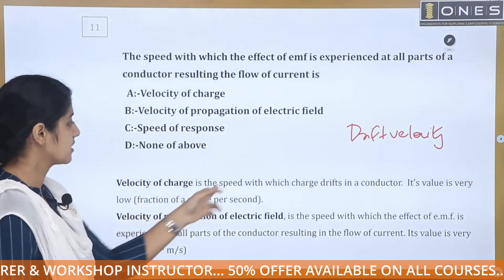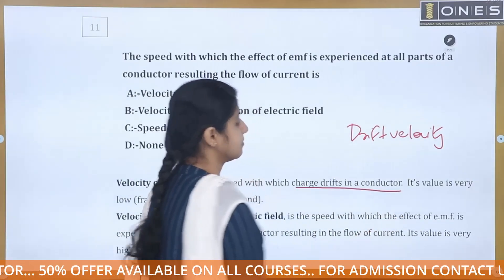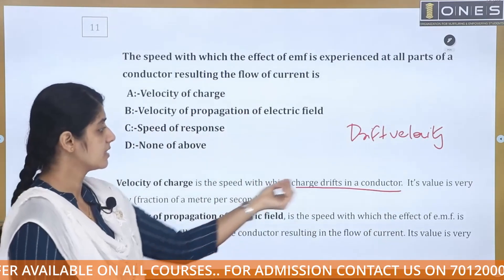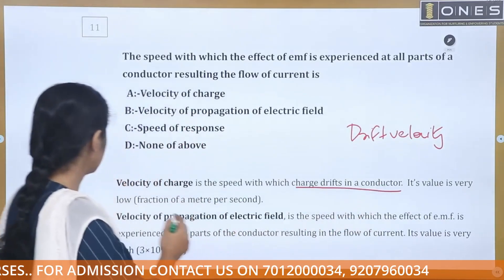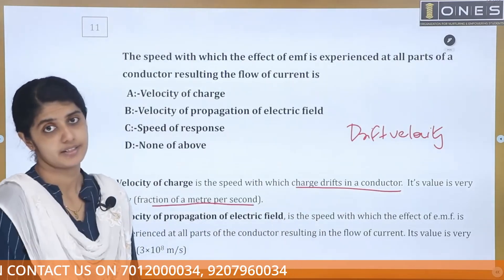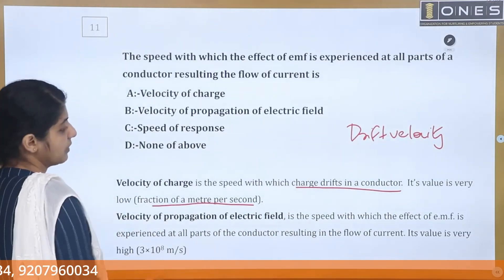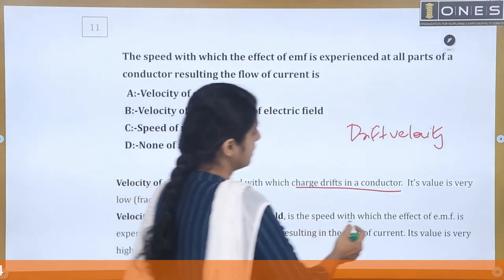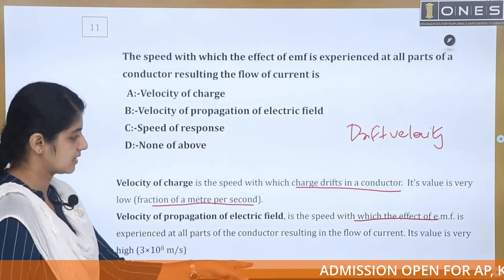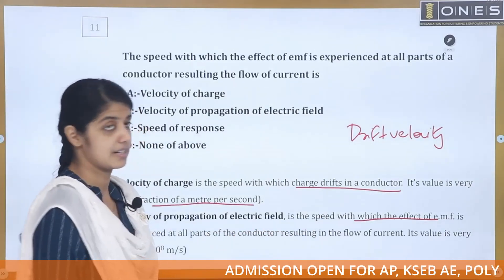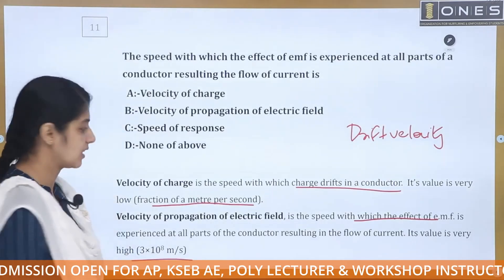The drift velocity is the speed with which charge drifts in a conductor. Its value is very low — a fraction of a meter per second. The velocity of propagation of electric field is the speed with which the effect of EMF is experienced at all parts of a conductor, resulting in the flow of current. Its value is very high: 3 × 10⁸ meters per second.